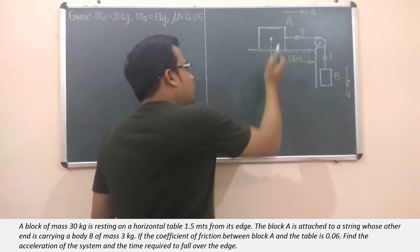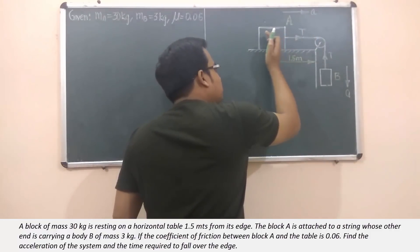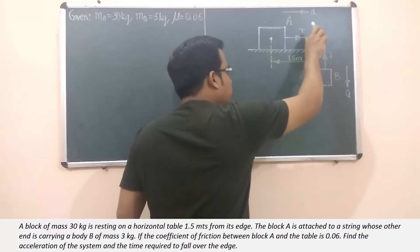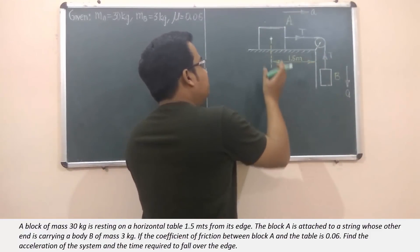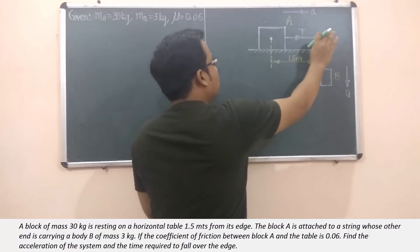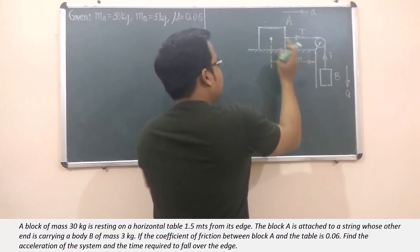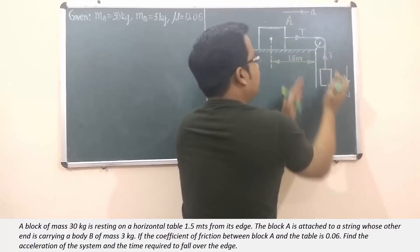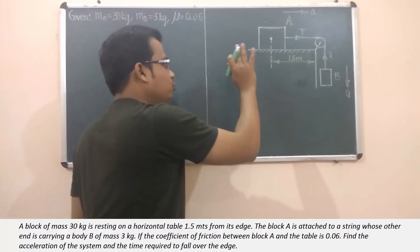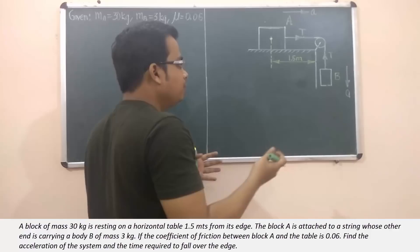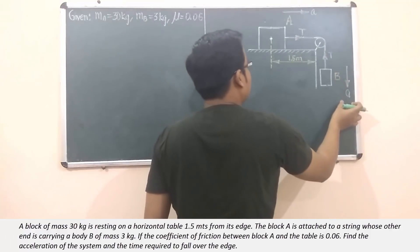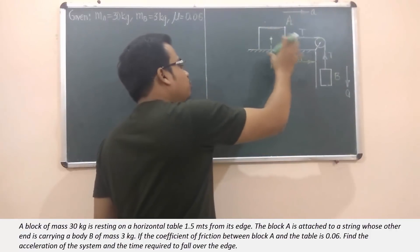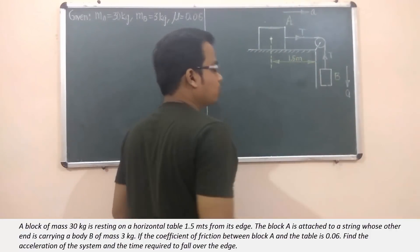In that process, this is going to go forward, and after a certain point in time it will reach here and it is going to fall over. So we need to find the amount of time taken by block A to just fall over, or when this 1.5 distance will become zero. But for all that to happen, we first need to figure out what the acceleration is going to be, and for that we need to make the free body diagrams of both these blocks.